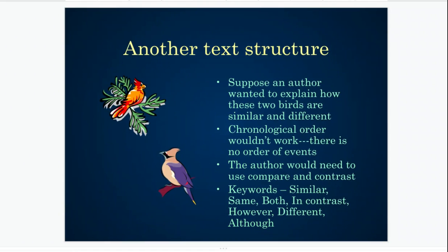Now, let's suppose that an author wants to explain how two birds are alike and how they're different. Chronological order wouldn't work here because I'm not talking about an order of events. So in this case, I would need to use comparing and contrasting. If I wanted to tell you how these birds are similar or different, I would probably use keywords like similar, same, both, in contrast, however, different, although. So if you are reading through a passage and you see these kinds of keywords, that's a clue that they are comparing something.